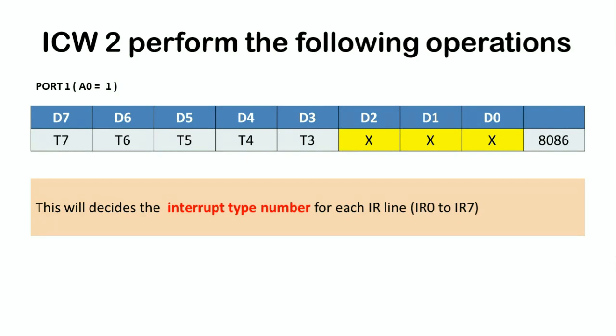The next command word is ICW2. This word allows us to decide the type numbers to be associated with the interrupt input lines IR0 to IR7. This word is sent with A0 equal to 1. The bits D0, D1, and D2 vary from 000 to 111, and together with the upper bits D7 to D3, all bits D0 to D7 decide the type numbers of the interrupts IR0 to IR7.